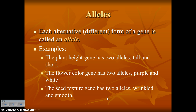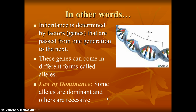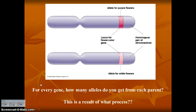Some examples: the plant height gene has two alleles — tall and short. The flower color gene has two alleles — purple and white. The seed texture gene has two alleles — wrinkled and smooth. Mendel determined that inheritance is caused by factors — which we now know as genes — passed from one generation to the next, and those genes come in different forms called alleles. The law of dominance simply states that some alleles are dominant and some alleles are recessive.